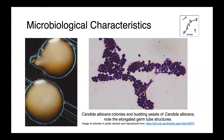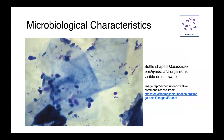In these images, you can see Candida albicans. On the left, we have colonies of pure cultures with this very typical creamy yeast-like appearance, and on the right, we have budding yeast with some of these germ tubes forming. In this image, you can see bottle-shaped Malassezia pachydermatis organisms on cytological examination of an ear swab from a dog — outlined in red, these bottle-shaped or bowling pin-shaped structures.